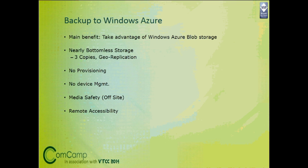Now let me share my screen and switch to the demo. In this demo, I will show you how to take the tail log backup of a corrupted database. We will create a database, corrupt it explicitly, see where the corruption exists, what errors we get when a database is corrupted, how to take a tail log backup, and how to restore the database with almost zero data loss.